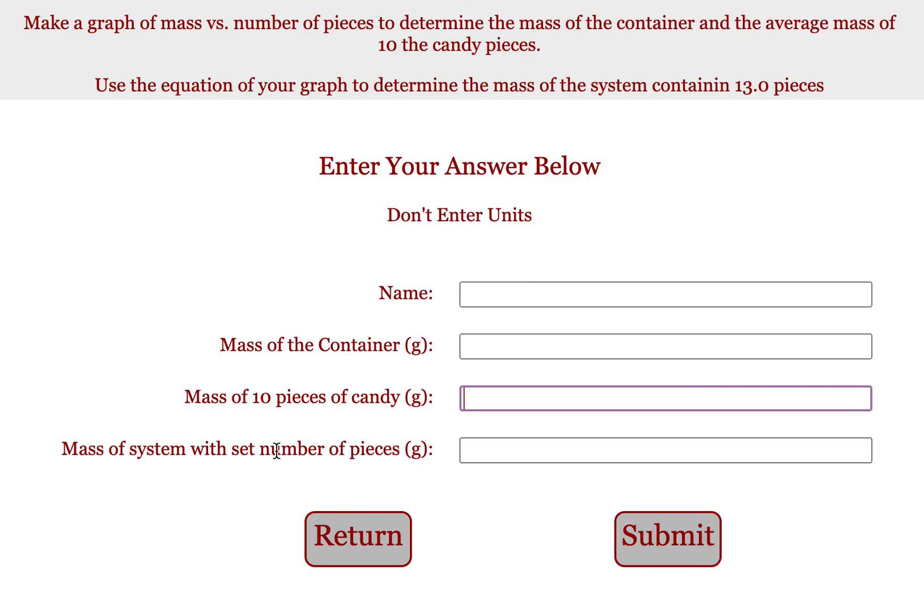So one last time, this bottom one is the mass of the system with 13 pieces. This is the mass of just the candy when you have 10 pieces. And this is the mass of the container by itself with no candy in it.